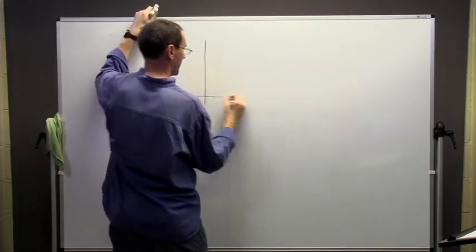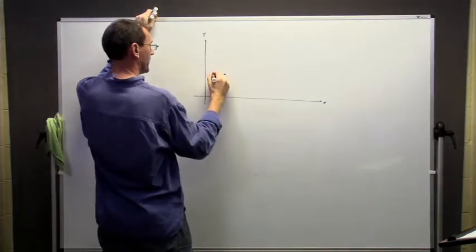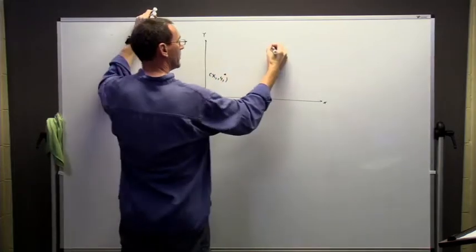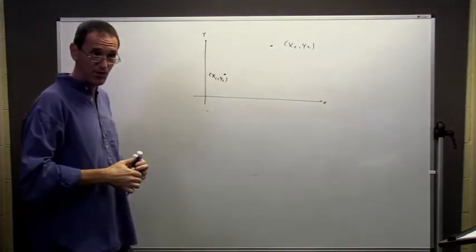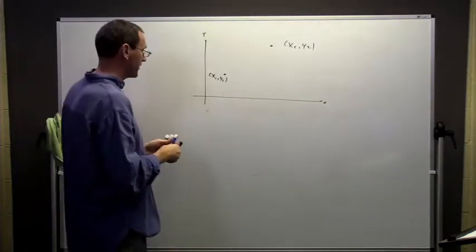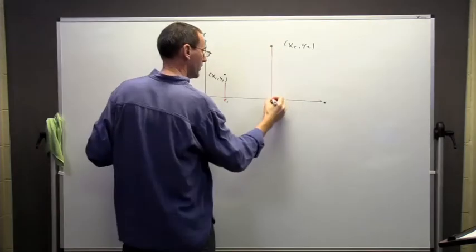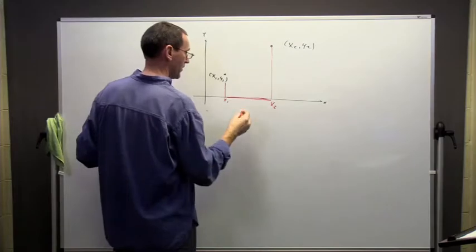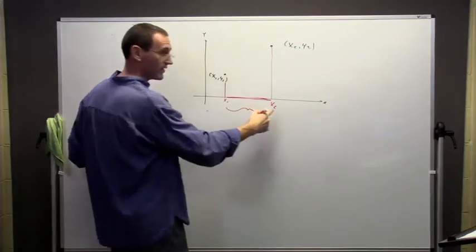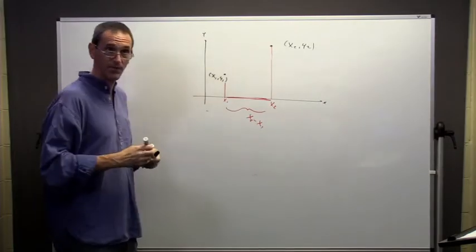Suppose we have two points. I'm going to talk about the change in the x's and the changes in the y's. So in terms of the x's, the change in the x is this distance from here to here is just x2 minus x1.